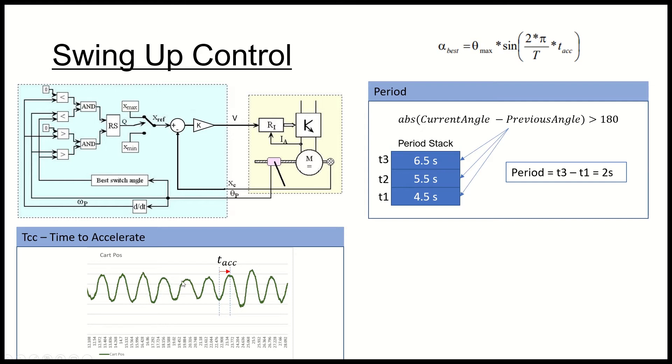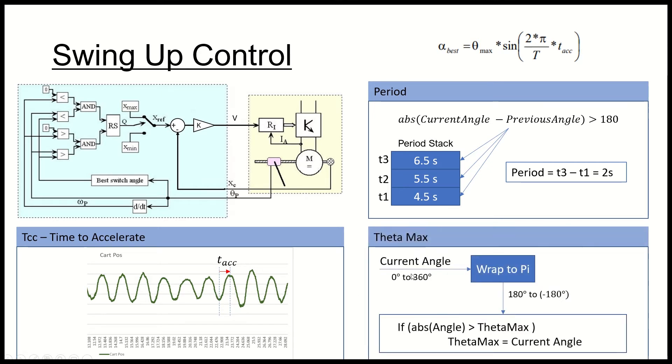The next one you need is the time to accelerate. When I've measured the data, when I've measured the cart position, I just looked at the data basically for when it actually didn't swing up and didn't work, I just looked at what this time acceleration time was, just measured it from the data itself and used that value.